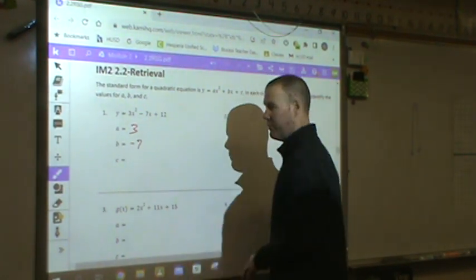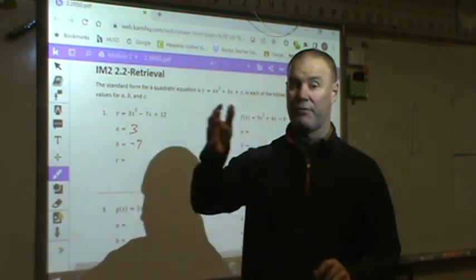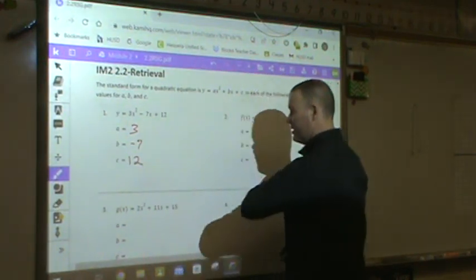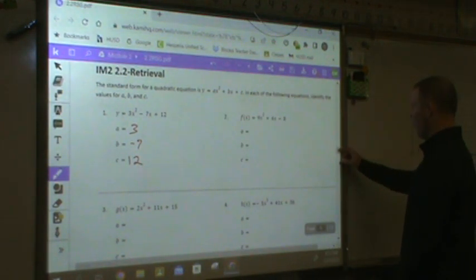B, therefore, would be negative 7. Remember, you always have to look to the sign in front of the number to determine if it's positive or negative. And then C is 12. It's that simple. You do the same thing for 1 through 4.